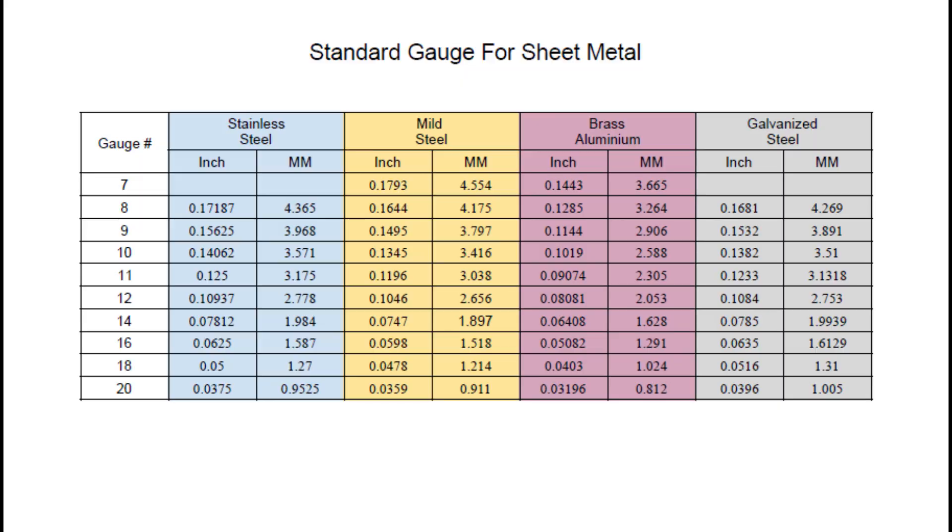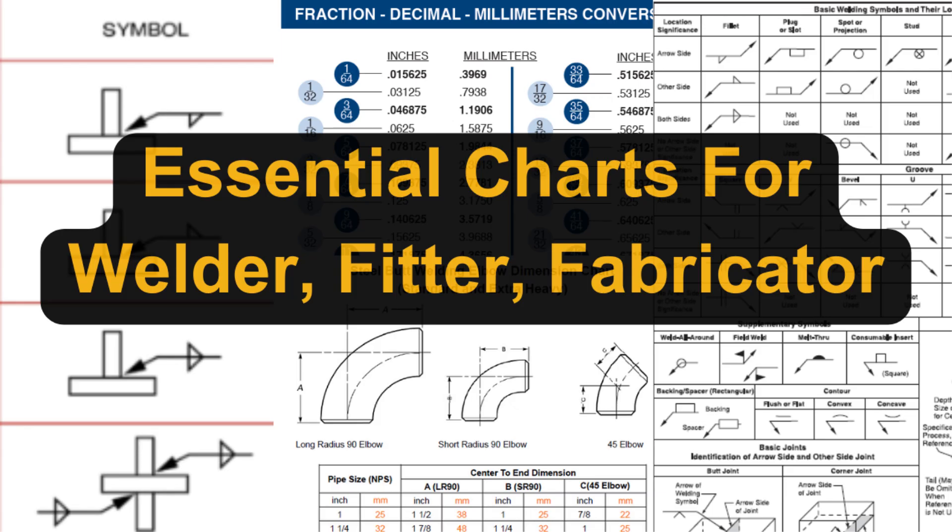The last one is a sheet metal gauge chart. If you are a metal fabricator, it is very helpful too. Besides, there are so many charts such as miter tab and pipe takeoff. Nowadays, it is so easy to get these charts if you google it. For your convenience, I added links to download the above charts. Thanks for watching and see you next week.